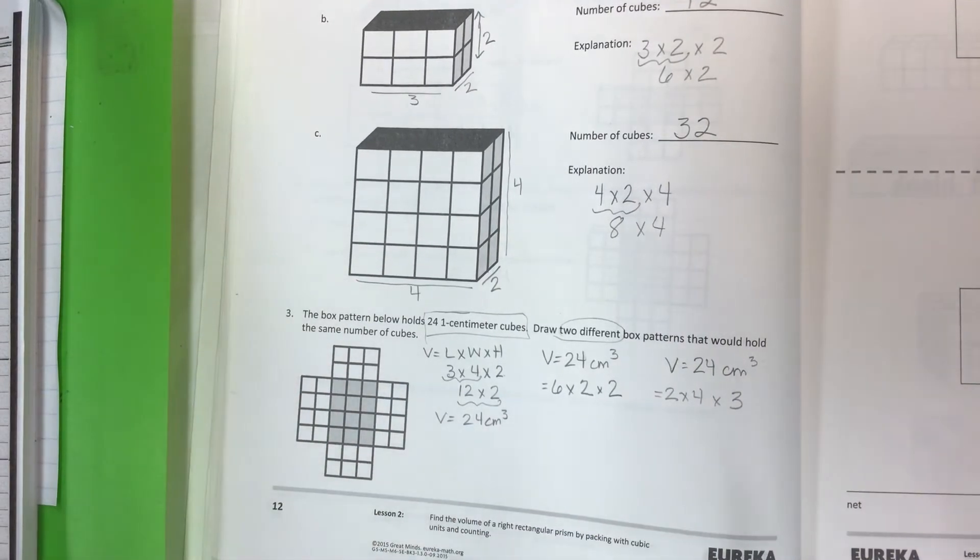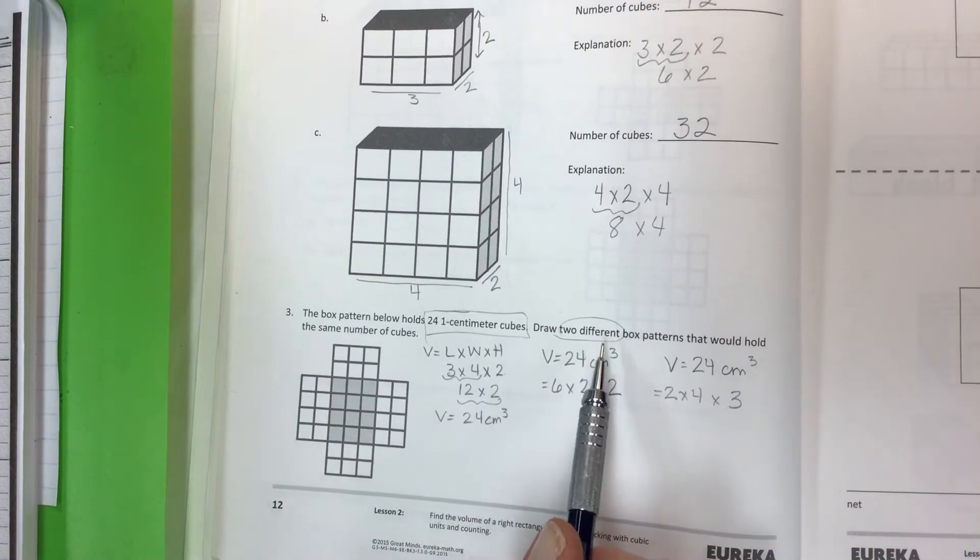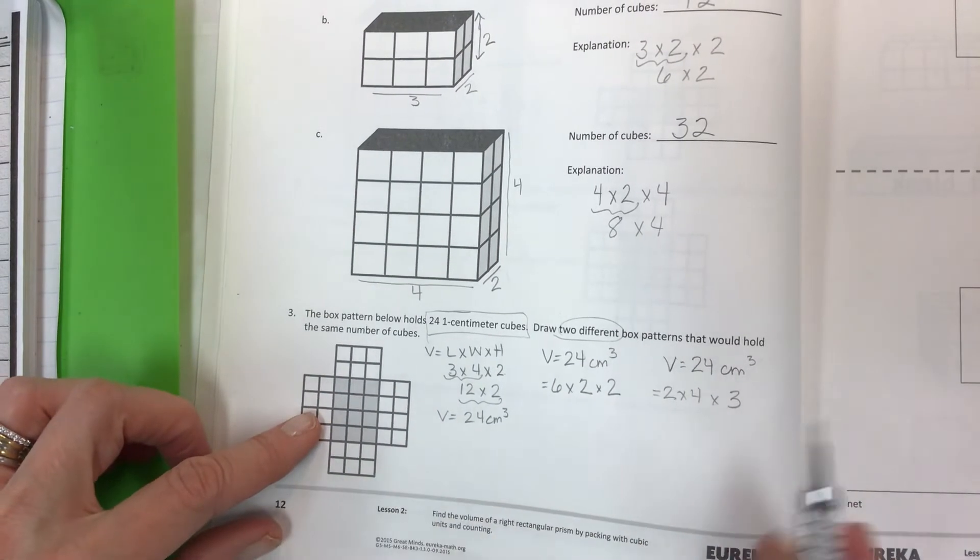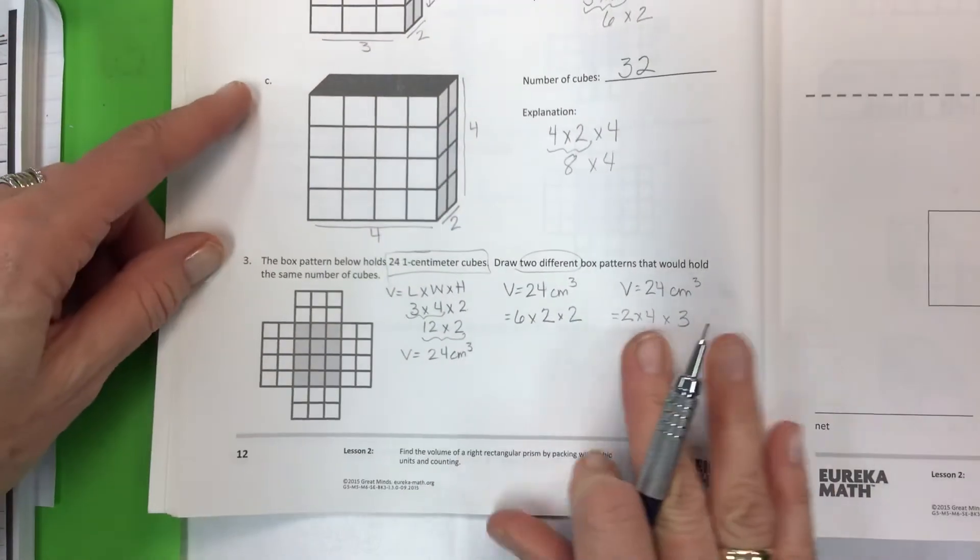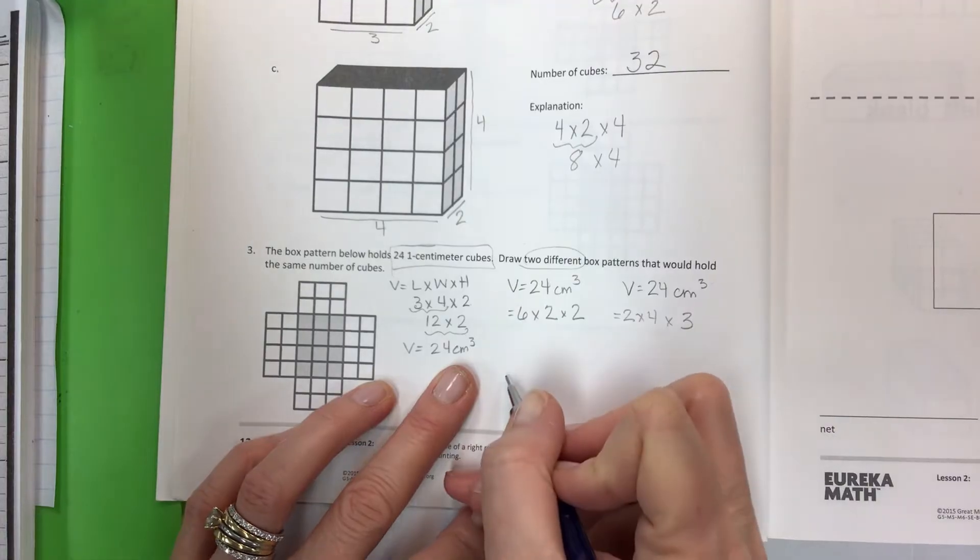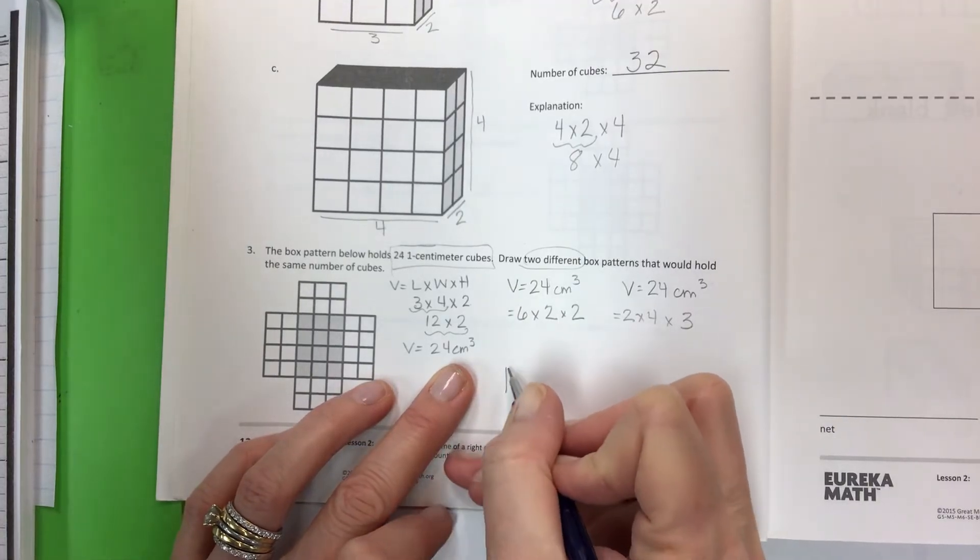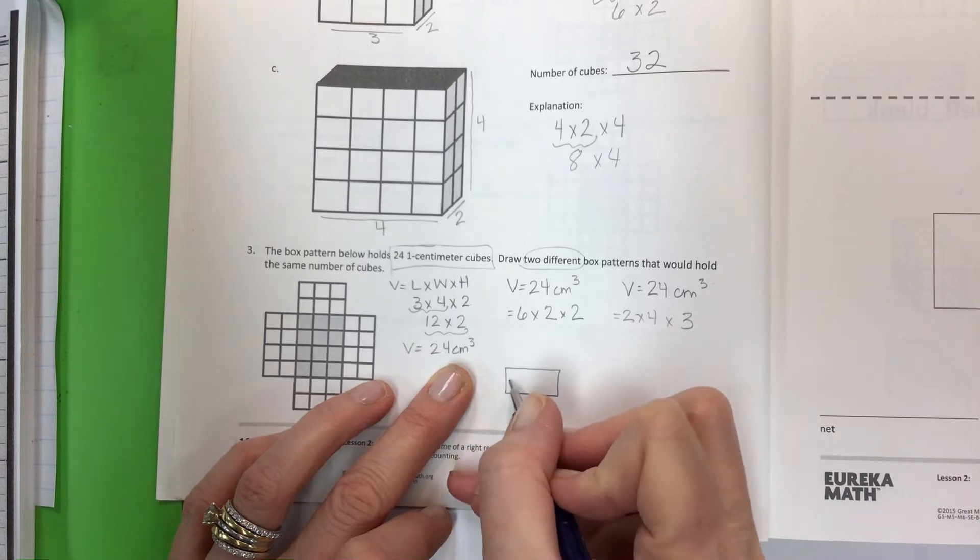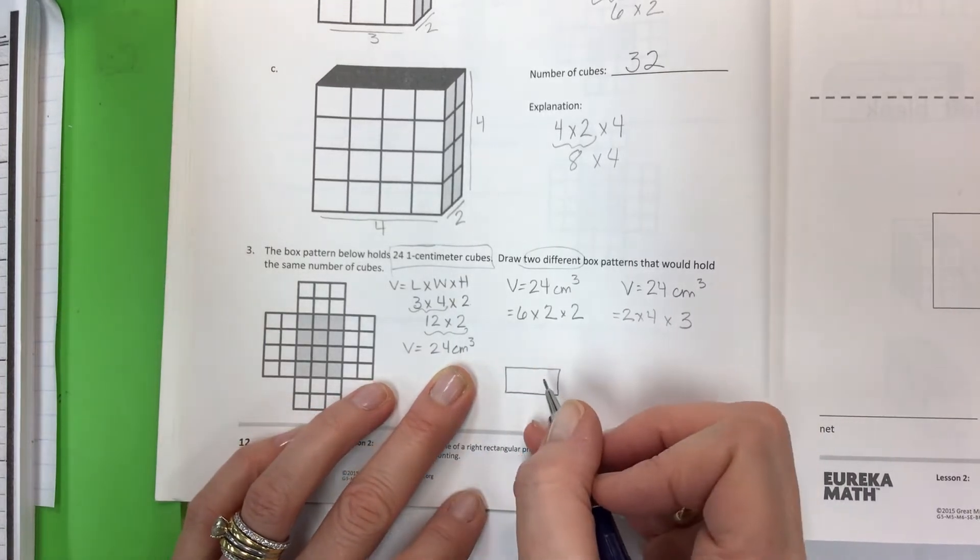24 is a great number to work with because there are so many options. Could you do 24 times 1 times 1? Yes, you could, but it would be a long skinny box. They want you to draw the box patterns, so that's going to be like all your shading. I could do like a 6 by 2 by 2.